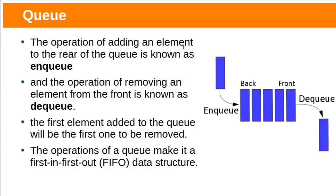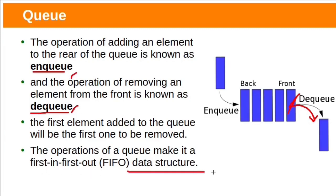The operation of adding an element to the Rear of the queue is known as Enqueue, and the operation of removing an element from the front is known as Dequeue. The first element added to the queue will be removed first. These Enqueue and Dequeue operations make the queue a first-in, first-out data structure.